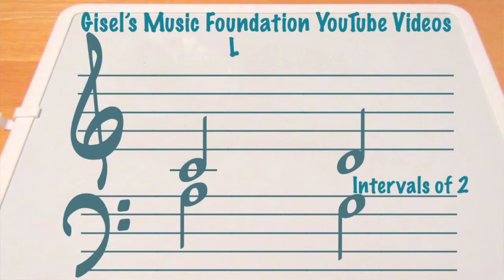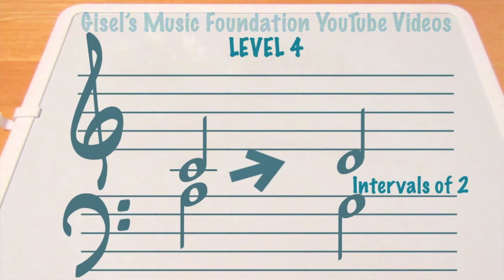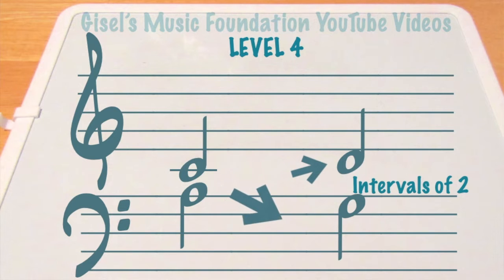So if I were to play C, D on the right hand and A, G on the left hand, they're both moving in opposite directions. C, D is moving up, A, G is moving down.